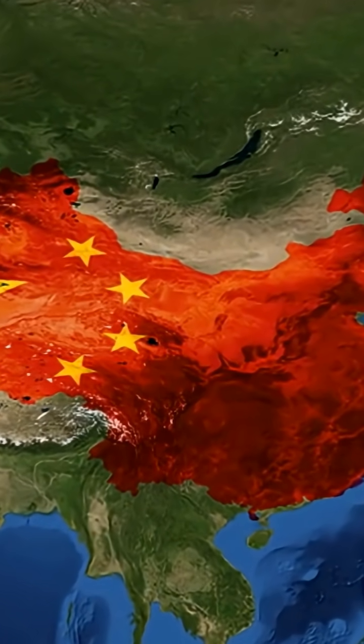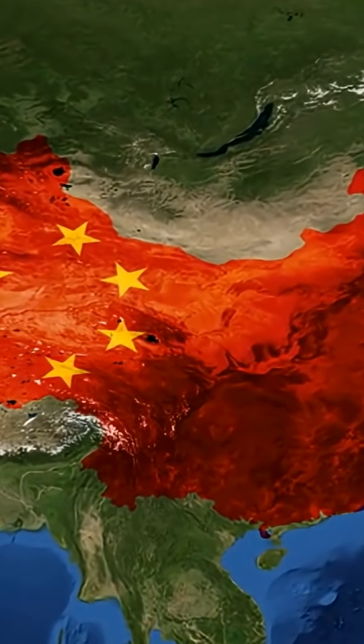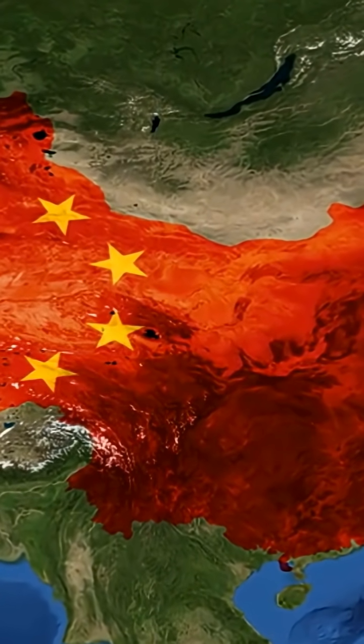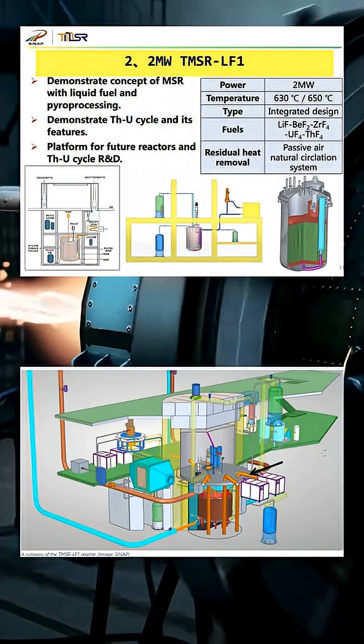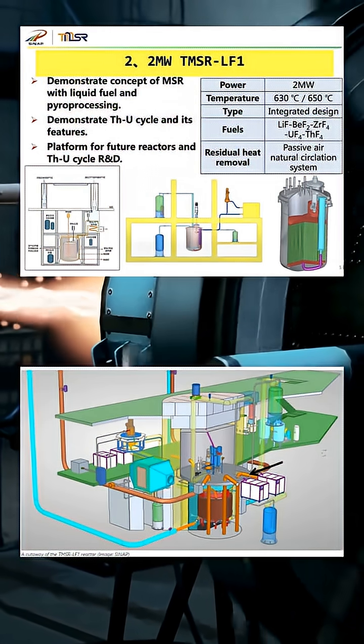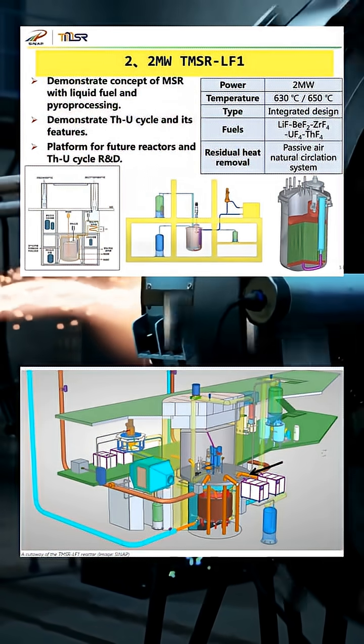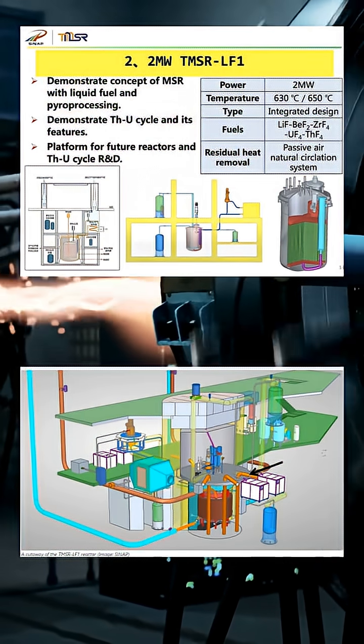China has just demonstrated something nuclear scientists have been trying to achieve for more than 50 years. In November 2025, China's experimental thorium molten salt reactor known as TMSR-LF1 successfully achieved the first real conversion of thorium into usable nuclear fuel inside an operating reactor.